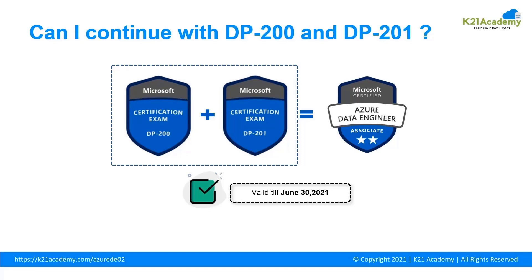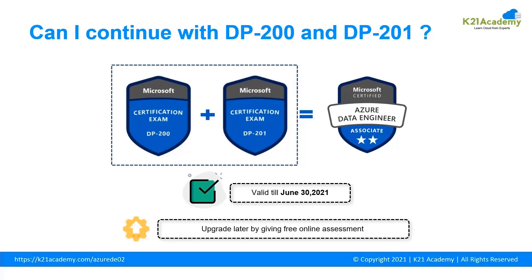Later, you can upgrade your exam to DP203 by giving a free online assessment. Here you should consider Microsoft's new policy: all Microsoft certification exams are valid for one year. Before one year, you have to give an online free assessment to keep them valid. This is also true for DP203 — even if you take DP203, within one year you again have to give a free online assessment to make sure your certification remains valid.